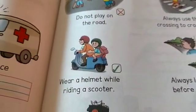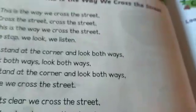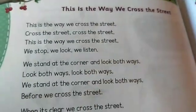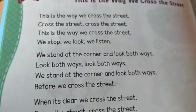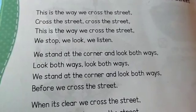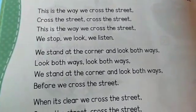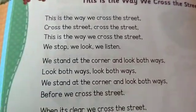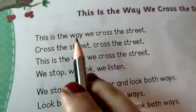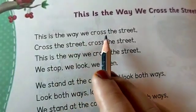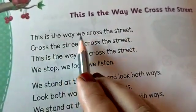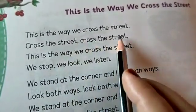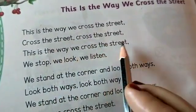Next one is a rhyme. This is the way we cross the street — this rhyme is based on safety rules on the road or street, about crossing the road, street, and going outside. This is the way we cross the street.